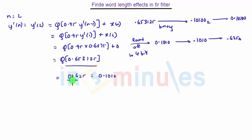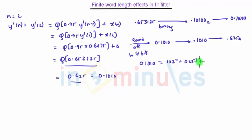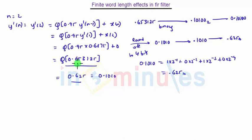To verify, 0.1010 equals 1 × 2⁻¹ plus 0 × 2⁻² plus 1 × 2⁻³ plus 0 × 2⁻⁴, which equals 0.625. For the decimal to binary conversion, if we take the value 0.653125...